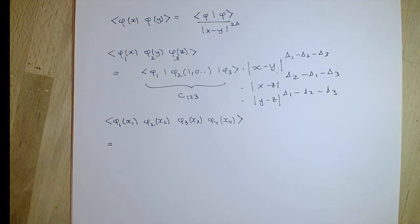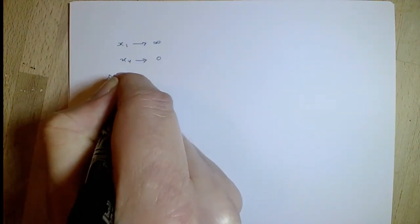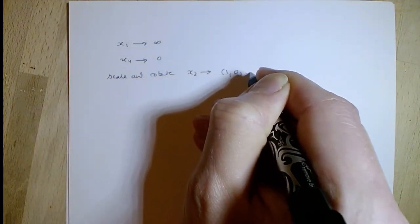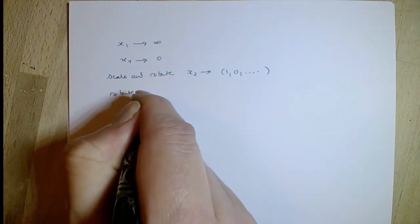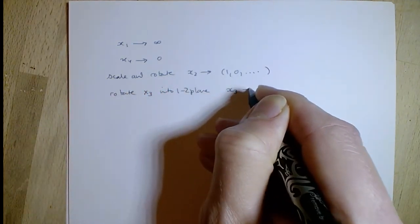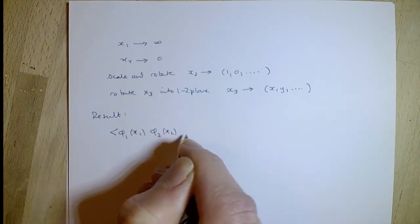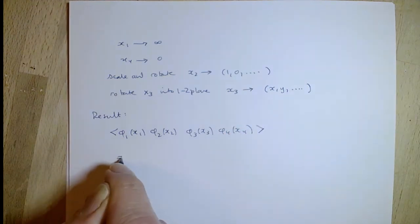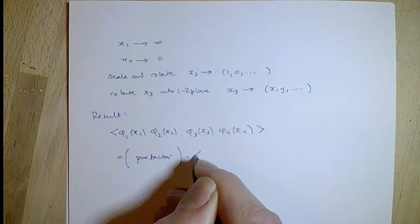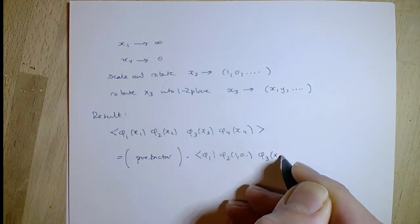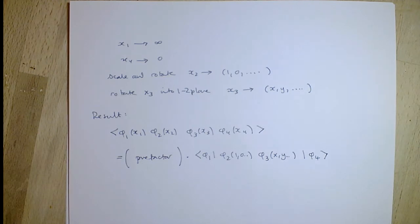For the four-point function: we can send x1 to infinity, x4 to 0, scale and rotate so x2 is at distance 1 along the 1-direction, and further rotate x3 so it's in the (1,2)-plane with coordinates (x, y, 0, 0, ...). That's the best we can do — we've no more symmetry left. So the four-point function of scalar quasi-primary fields is given, up to a pre-factor, by the value of the function evaluated at the special values (infinity, 1, x, y, 0): a two-parameter family of functions. The functional form is not fixed.